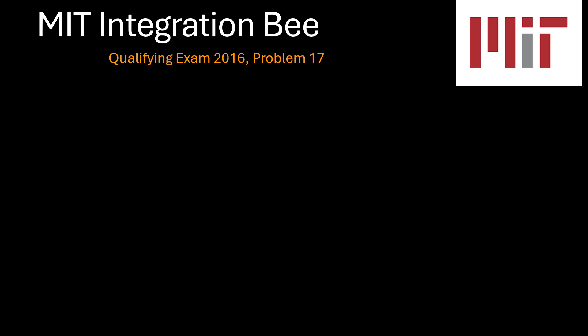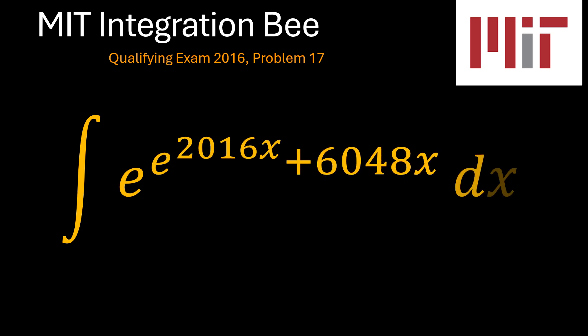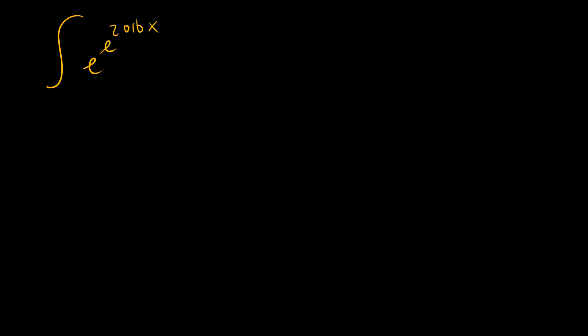Problem 17 of the MIT integration B qualifying exam 2016, which is the indefinite integral of e to the power e to the power 2016x plus 6048x. It looks quite intimidating, but believe me, this is a simple problem. So let's see how we may be able to solve it. Our problem is e to the power e to the power 2016x plus 6048x.